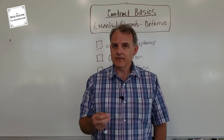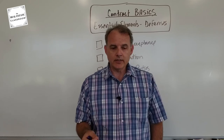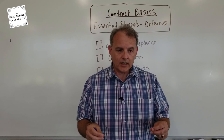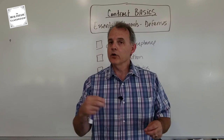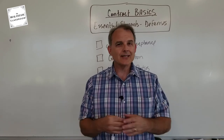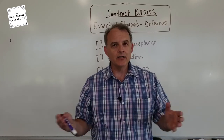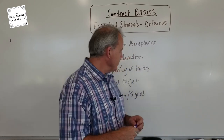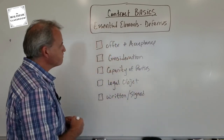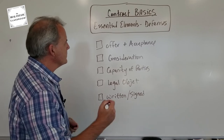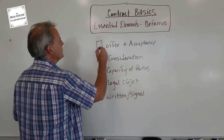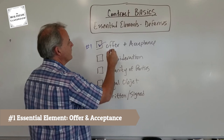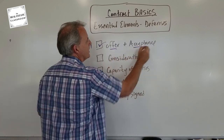Contracts have the same type of essential elements. A contract must contain certain things, otherwise, no matter who agrees to what, it's not a valid or an enforceable contract. The first essential element is what we call offer and acceptance.